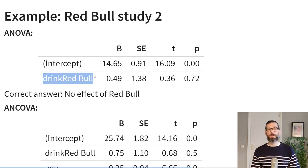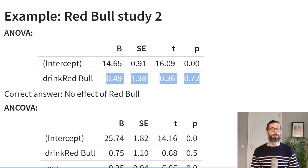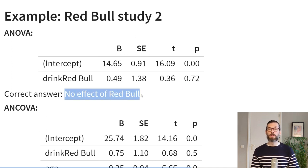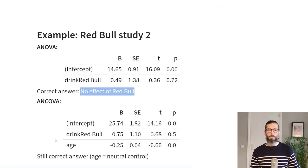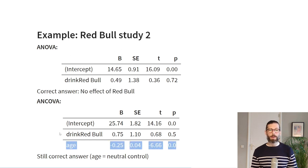The results might also look different. Consider the same example but with a slightly different causal structure. If we look only for the effect of drink type, we observe no significant effect — no difference in words remembered between the groups. We could conclude there's no effect of Red Bull on memory. But if we conduct an ANCOVA controlling for age, we might see that age has a significant effect, while there is still no effect of Red Bull. In this case, age is a neutral control — it didn't cause differences in drink preference, but it did affect words remembered.